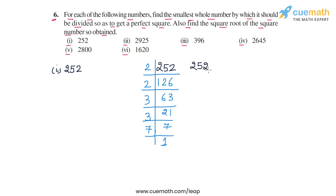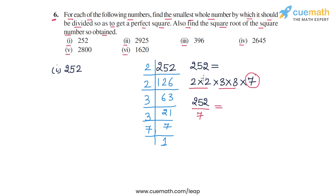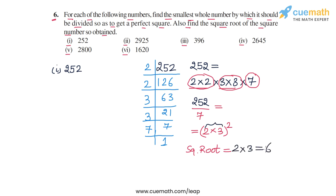The prime factorized form of 252 is 2 × 2 × 3 × 3 × 7. Pairing up the prime factors, we have a pair of 2 and a pair of 3, but the 7 is left unpaired. So we divide 252 by 7, leaving us with the pair of 2 and the pair of 3, which we write as (2 × 3)². The square root of the resulting number is 2 × 3 = 6. We divide 252 by 7 to get a perfect square, and the square root is 6.